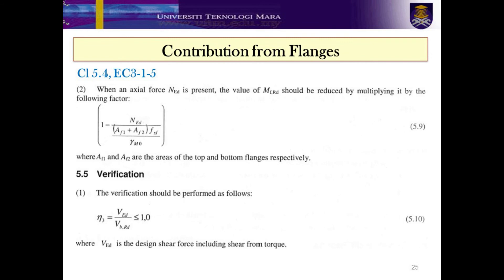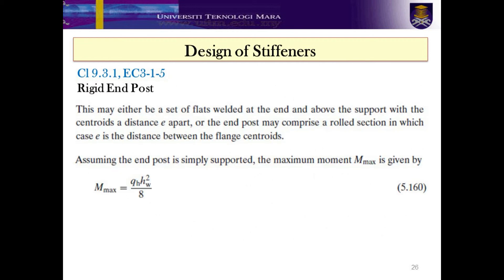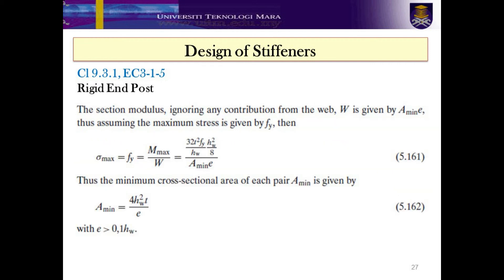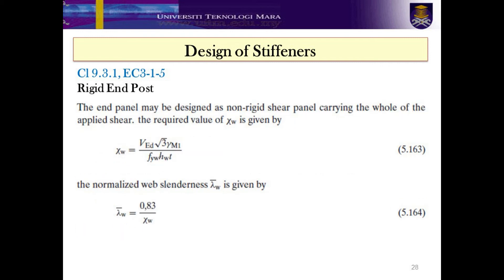When an axial force N_Ed is present, Clause 5.4 in EC3 Part 1-5 Number 2 provides the guideline in which the value of M_c,Rd should be reduced by multiplying with the factor given in Equation 5.9. To design a rigid end post, the maximum moment is given by Equation 5.160, while the maximum stress is given by phi in Equation 5.161. Thus, the minimum cross-sectional area of each pair is given in Equation 5.162. For the non-rigid end post, the contribution web factor for the rigid end post is given in Equation 5.163, whilst the slenderness parameter is given in Equation 5.164. All these equations are given in Clause 9.3.1, EC3 Part 1-5.